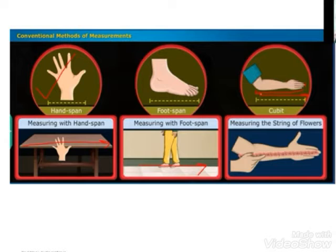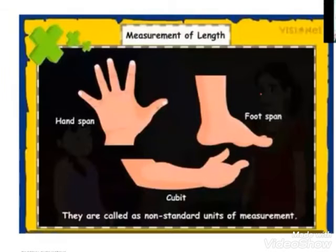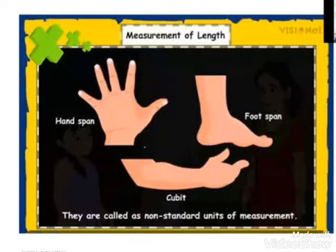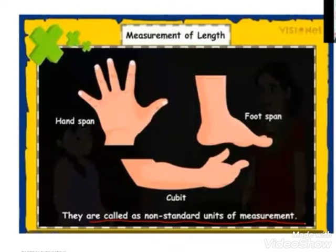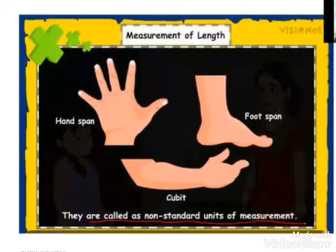Since different people have different sizes, these measurements can vary. It may be possible that your hand is small and my hand is big, so again the measurement can vary and we will not get accurate measurement. That's why they are called non-standard units of measurement. Hand span, cubit, foot span — you are able to measure, but you will not get accurate measurement since the size of hand and leg can vary from person to person.